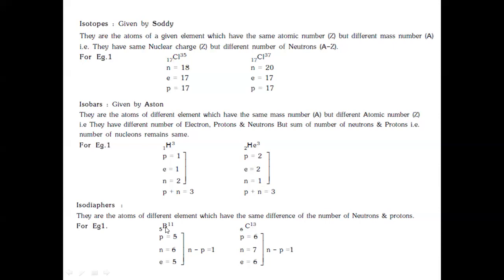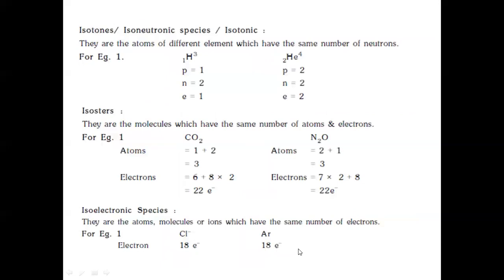For boron ⁵B¹¹: protons = 5, neutrons = 6, electrons = 5; difference between neutrons and protons = 1. Similarly, ⁶C¹³ has protons = 6, electrons = 6, neutrons = 7; difference between neutrons and protons = 1. Isotones, also known as isoneutronic species, are atoms of different elements which have the same number of neutrons. For example, ¹H³ has 2 neutrons and ²He⁴ also has 2 neutrons.